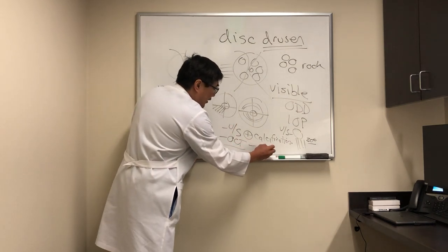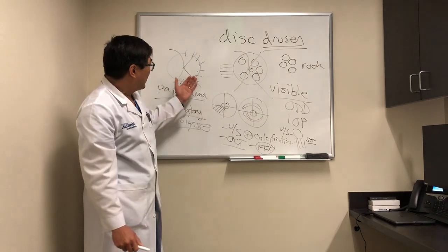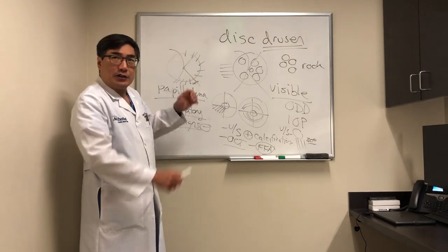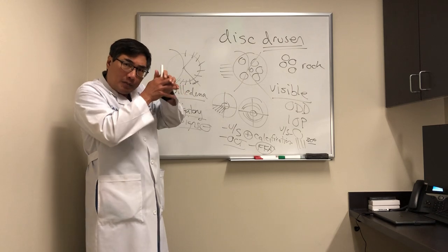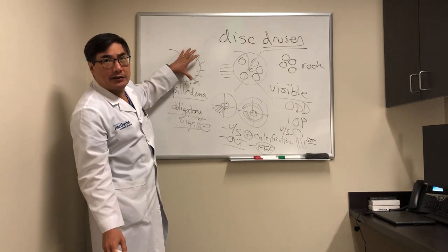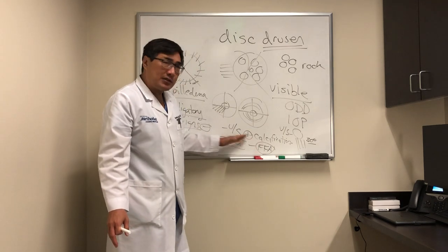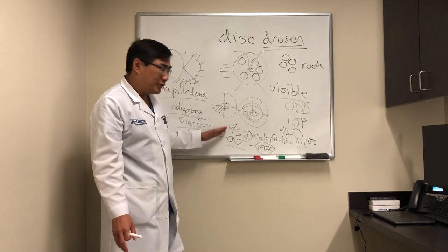And fluorescein angiogram, fundus fluorescein angiogram, probably is the best test, because when we have true disc edema, there's going to be hyperfluorescence from leakage of the disc. And that leakage represents the breakdown of the blood-brain barrier. And so there are plenty of papers that are comparing these three modalities, fluorescein against OCT and ultrasound.